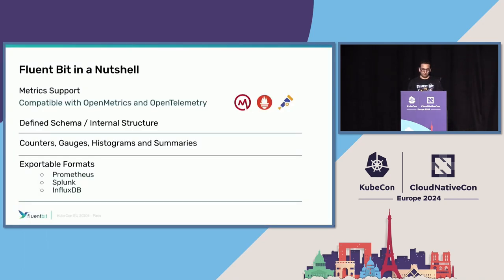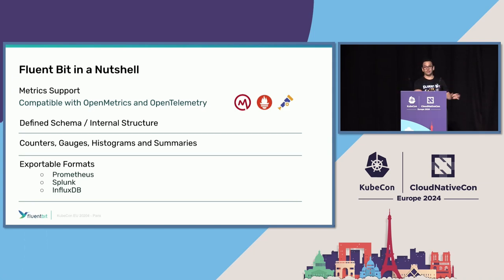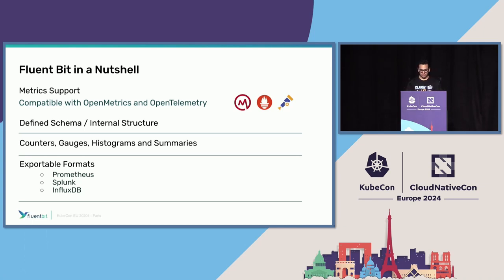In a nutshell, FluentBit as an agent can handle all telemetry types of data. To be honest, it was not designed for that — it was designed for logs. But the way we designed how to handle logs was in a very agnostic way. We don't care how the data looks; we serialize it, provide some processing, and ship it to any type of backend storage. That's how FluentBit evolved from handling just logs to metrics and now traces at the same time.